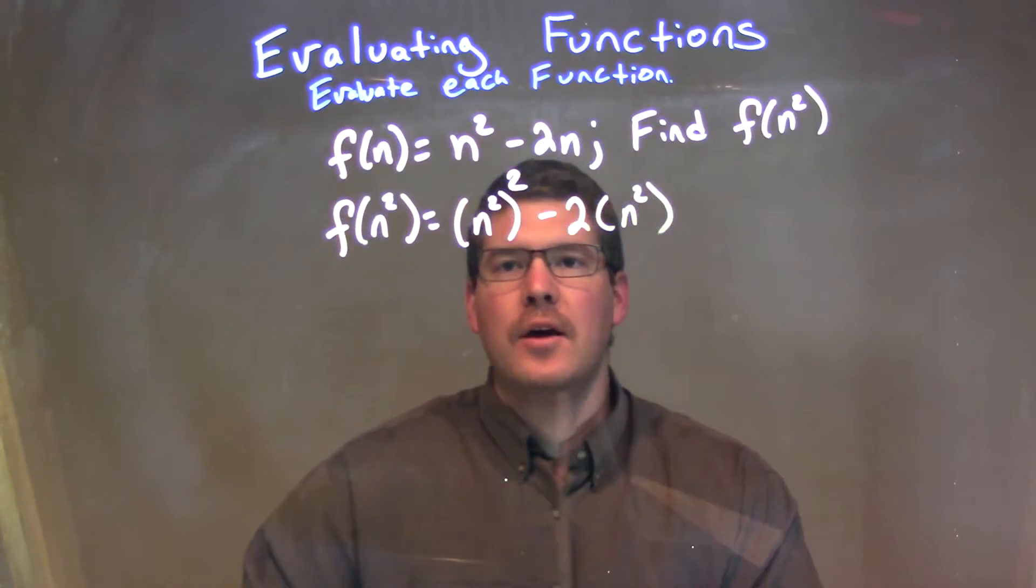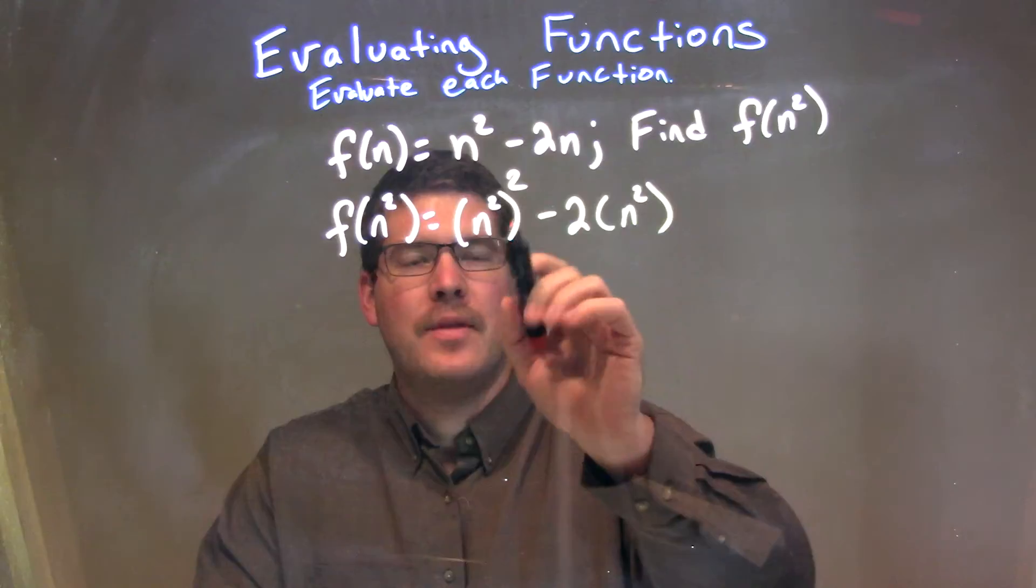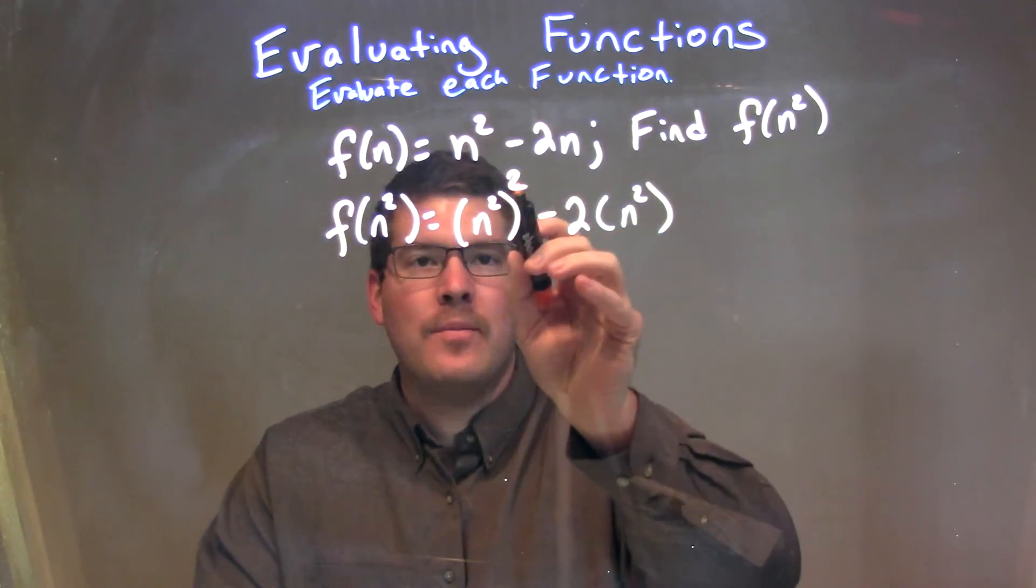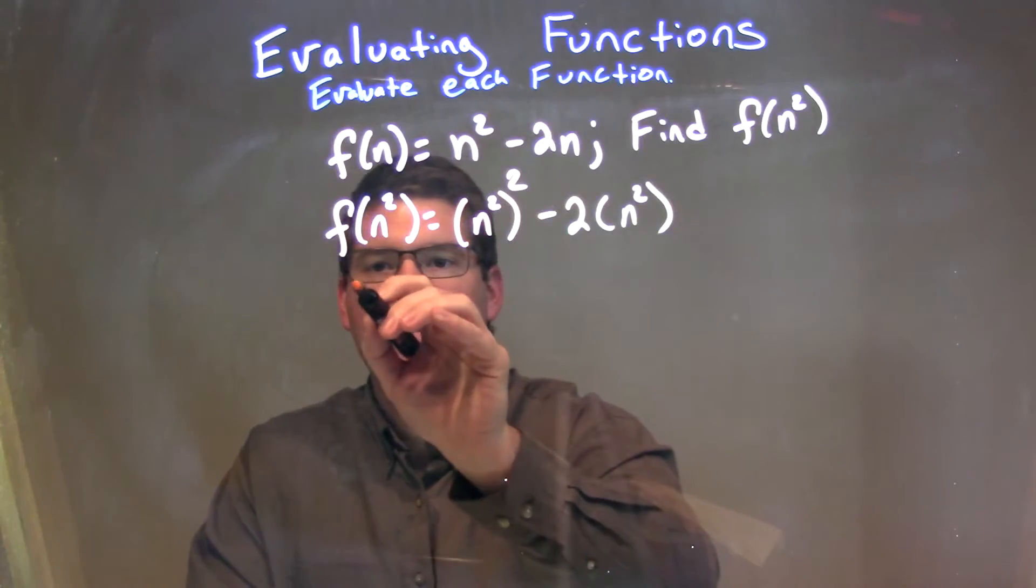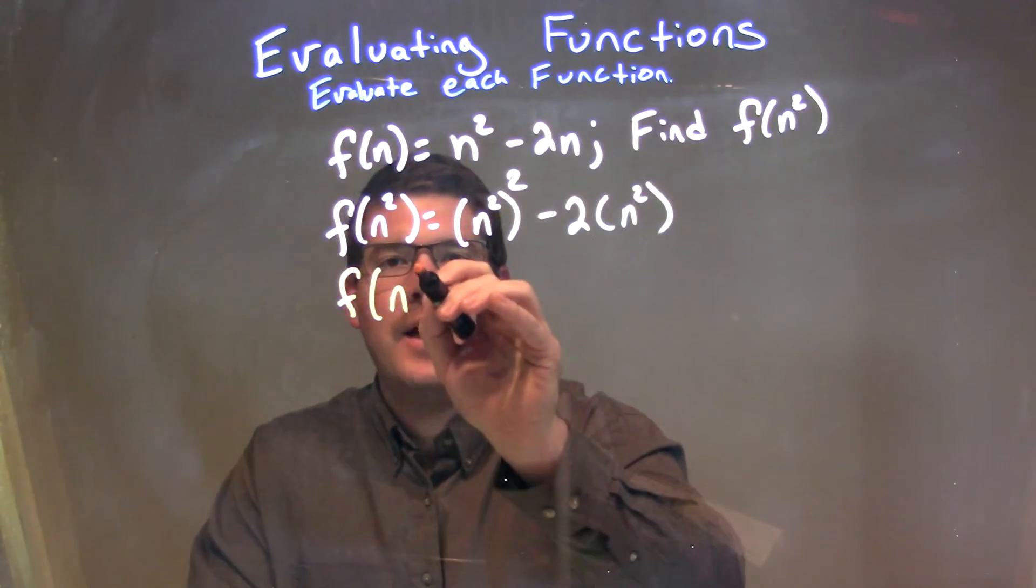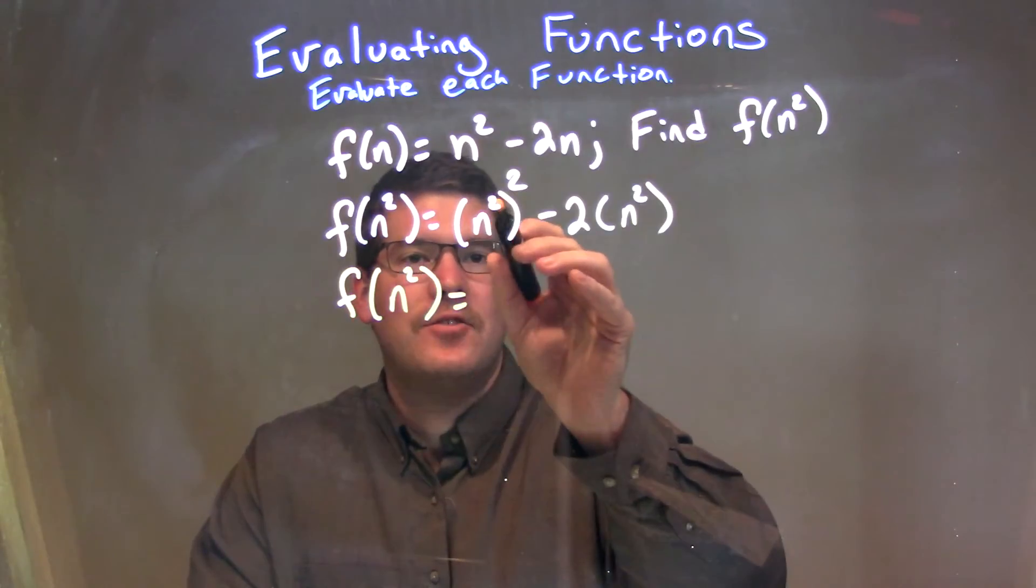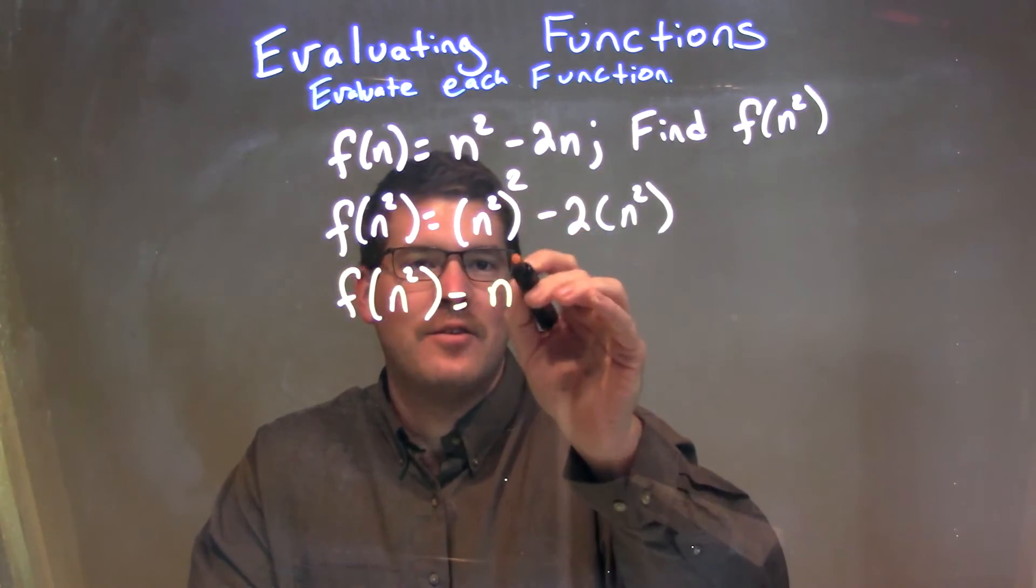Now we're simplifying this. An exponent all to the exponent power—we're multiplying the exponents. So we have f of n squared equals, 2 times 2 is 4, so we have n to the fourth power here